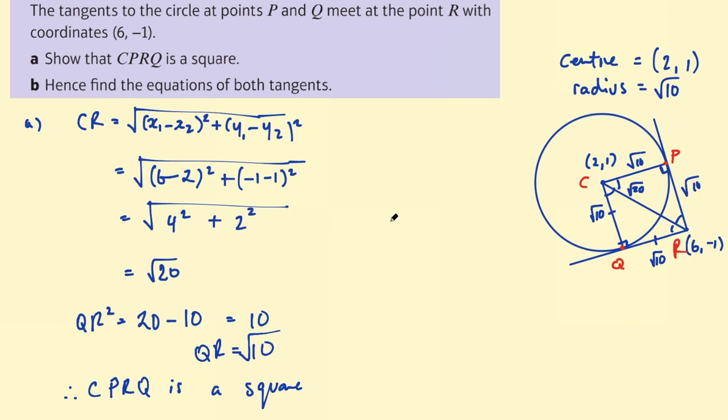Part B we need to find the equations of both tangents. How do you find an equation of a line? Well one way is to find two points on that line. At the moment we only have one point R. If we can find Q and P then we can find the equations of those tangents.